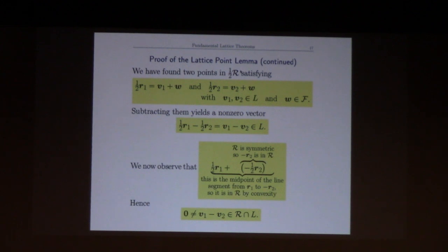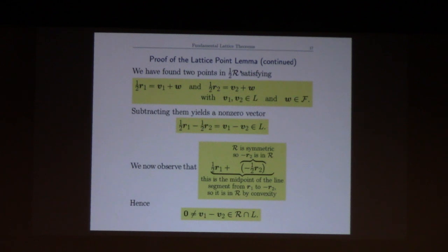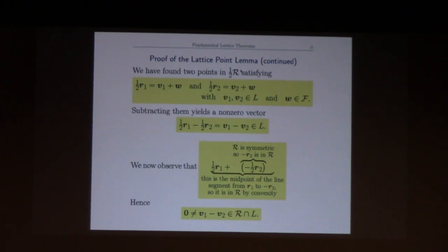Question: since we have regions there would be lots and lots of choices. What I said is there exists a pair of points r1 and r2 — you're right, there are lots of choices. Odds are they'll probably give you the same v1 minus v2, because if this r1 and r2 work and I shift each of them a tiny bit, they'll still work, but their difference will be the same lattice point.